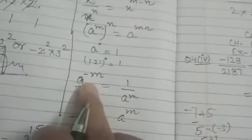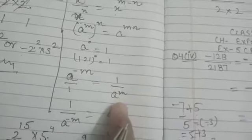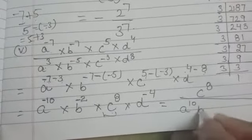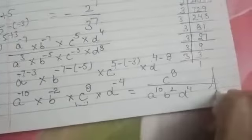Now just take it down. a^10, b^2, and d^4. This is the answer.